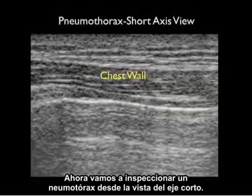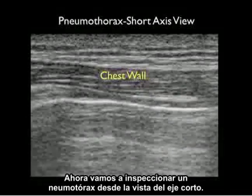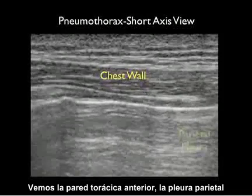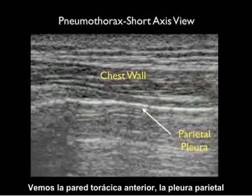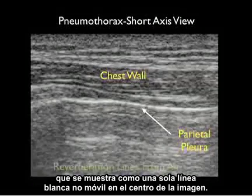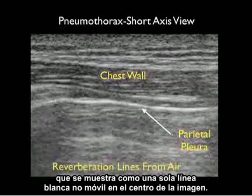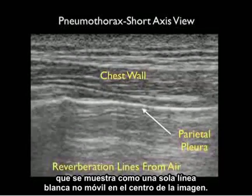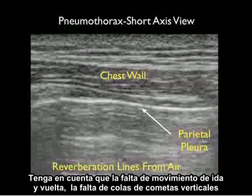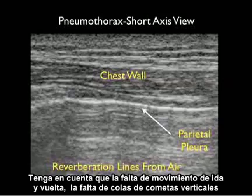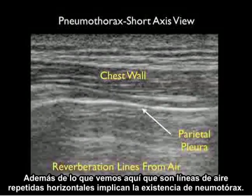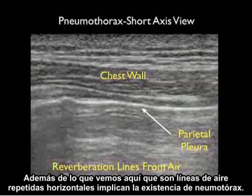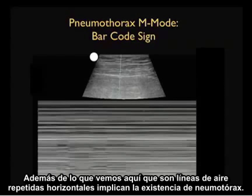Now let's inspect a pneumothorax from the short axis view. We see the chest wall anteriorly and the parietal pleura shown as a single non-mobile white line in the middle of the image. Note the failure of movement back and forth, the lack of vertical comet tails, and we see repeating horizontal air lines from the pneumothorax.